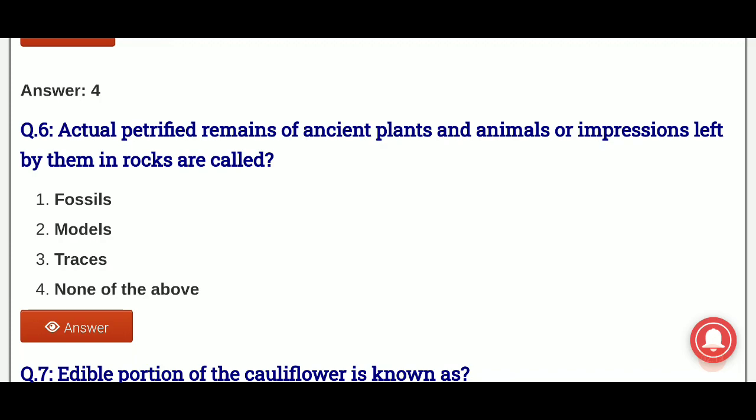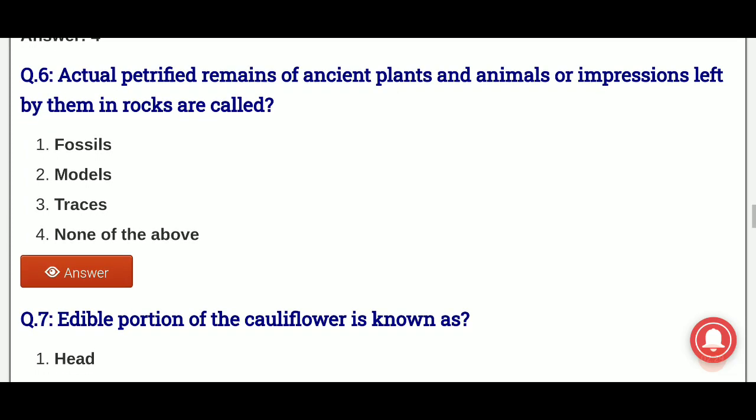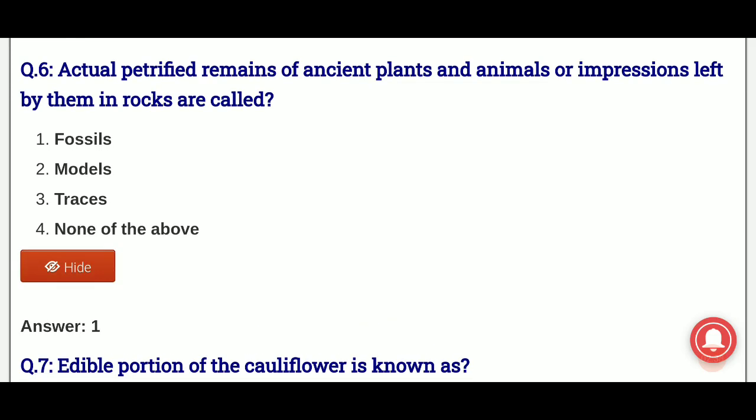Sixth question: actual petrified remains of ancient plants and animals or impressions left by them in rocks are called? What do we call the impressions of ancient plants and animals on rocks? The options are: fossils, models, traces, none of the above. And the answer is option 1, that is fossils — the petrified remains of ancient plants and animals or their impressions on rocks are known as fossils.